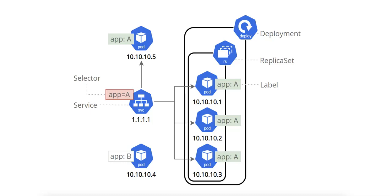Let's talk about Kubernetes deployments and services, starting with this diagram. We have pods with labels of app-a and app-b, and these shapes represent running instances of containers in Kubernetes. Each pod has a unique IP address — for example, the pods labeled app-a have IP addresses 10.10.10.1, .2, .3, and .5, and another pod labeled app-b has the IP address 10.10.10.4.